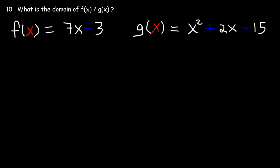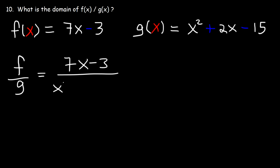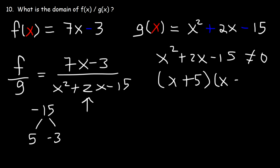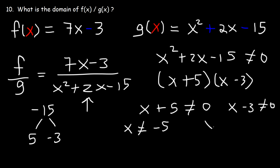Number 10: what is the domain of f divided by g? So f divided by g is going to be 7x minus 3 divided by x squared plus 2x minus 15. X can be anything except any value that produces a 0 in the denominator. So x squared plus 2x minus 15 cannot equal 0. Let's factor the expression — two numbers that multiply to negative 15 but add to 2: that's positive 5 and negative 3. So it factors to x plus 5 times x minus 3. Therefore x plus 5 cannot equal 0 and x minus 3 cannot equal 0, meaning x cannot equal negative 5 and x cannot equal 3.